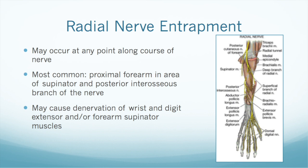Our presentation is on radial nerve entrapment. This can occur at any point along the nerve, but it most commonly happens in the proximal forearm area around the supinator muscle where the posterior interosseous branch of the radial nerve is. It can also occur more proximally with a humerus fracture or more distally on the radial aspect of the wrist. This can cause denervation of different wrist or digit extensors, but particularly the forearm supinator muscles are affected.